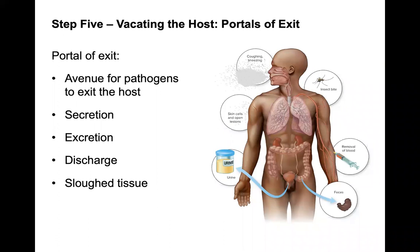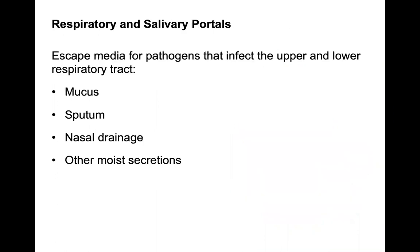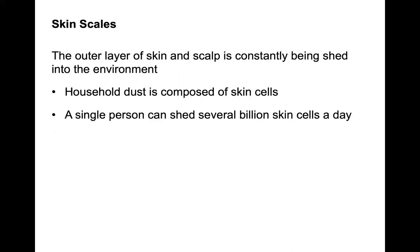Once you've entered the host, adhered to host surfaces, invaded host defenses, and caused damage, step five is vacating the host through portals of exit. Pathogens exit through secretion, excretion, discharge, or sloughed tissues. Respiratory and salivary portals are escape routes for pathogens that infect the upper and lower respiratory tract via mucus, sputum, nasal drainage, and other moist secretions.